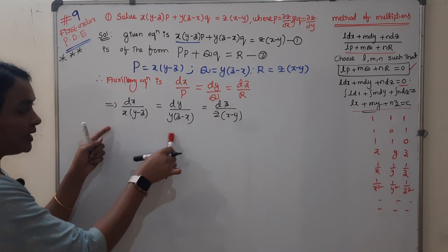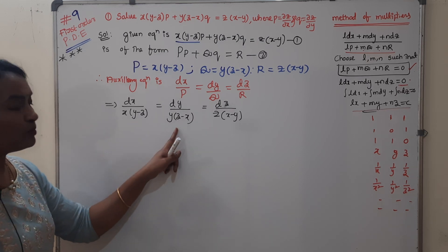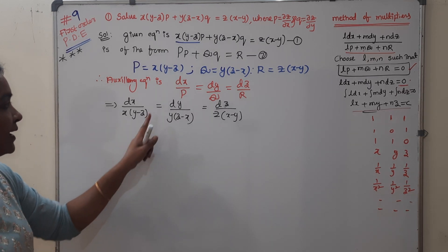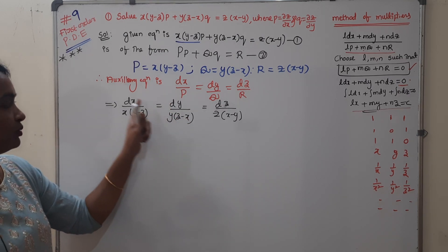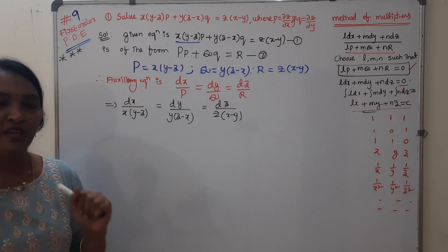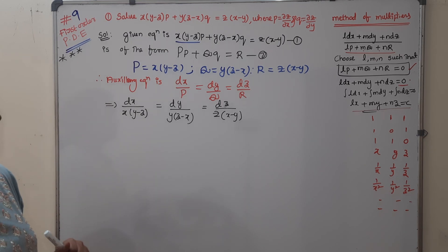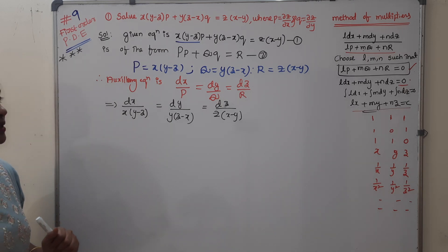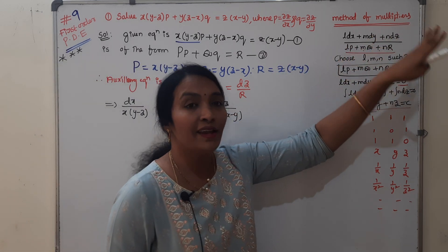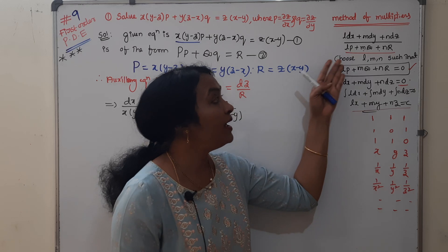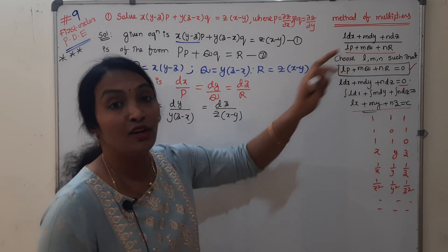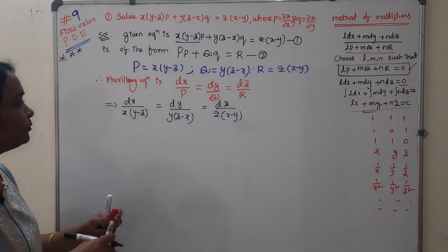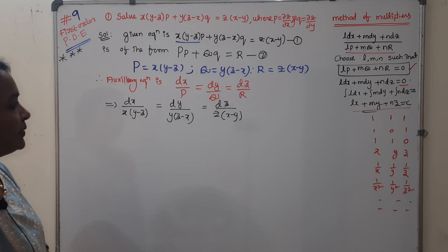If you take these two fractions and try to solve by variable separable, it is not possible because dy has y, but z and x are extra. So the method of multipliers must be used. In the method of multipliers, we need ldx + mdy + ndz, where l, m, n are the multipliers, such that the denominator becomes zero.